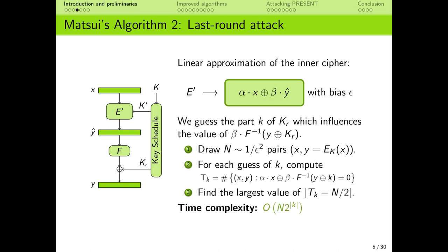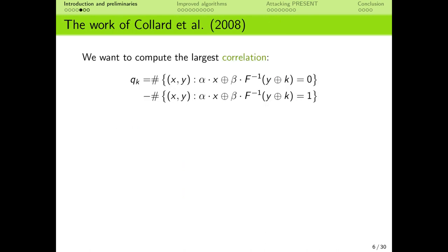If we implement this algorithm, its time complexity is the number of available pairs, n, times the number of guesses for the part of the last round subkey, which is usually 2 to its number of bits. Can we improve this time complexity? This type of attack needs to compute the correlation of the linear approximation for multiple guesses of the last round subkey.